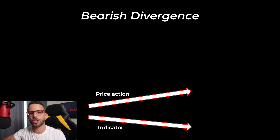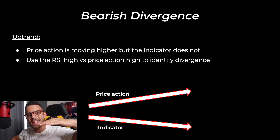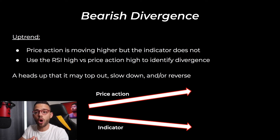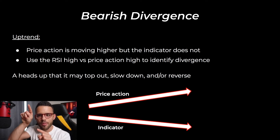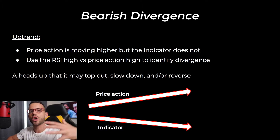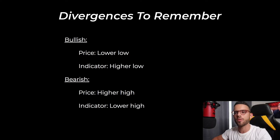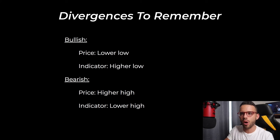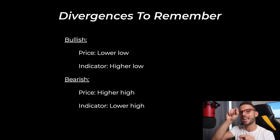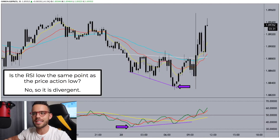Now let's talk about bearish divergence — it's just the opposite. Price action is rising, it's in an uptrend, and the indicator is moving lower from left to right. It signals that the market could be at a top because price action is moving higher to grab orders while the indicator is moving lower, telling us the true move is going to be down. To sum it up: bullish divergence is when price is making lower lows and the indicator is making higher lows. Bearish divergence is when price is making higher highs but the indicator is making lower highs.